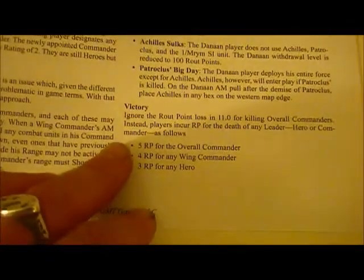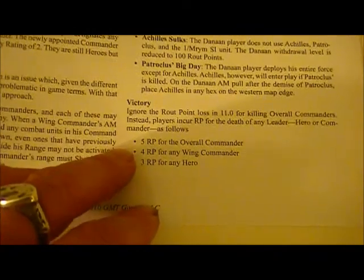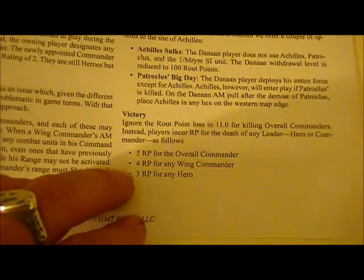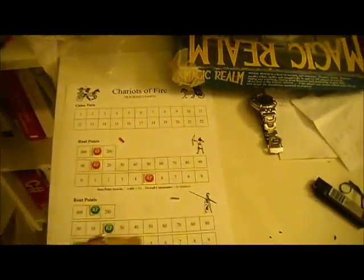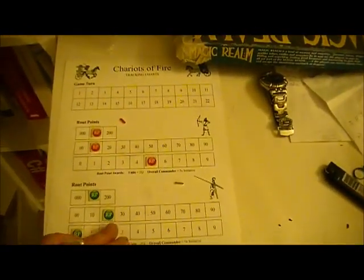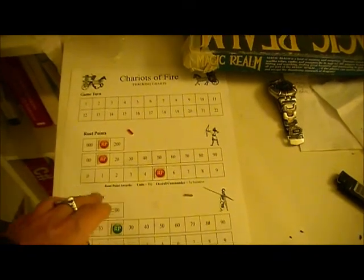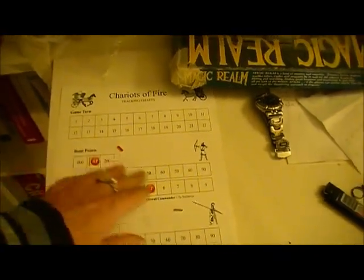Leader values have been changed. Only the overall commander normally counts, but he doesn't count much anymore — the wing commanders and the heroes all count for victory points and route points. The Danians are at 120 and the Trojans at 115.